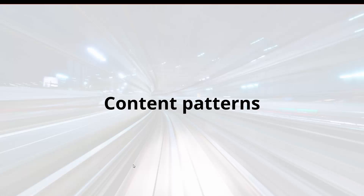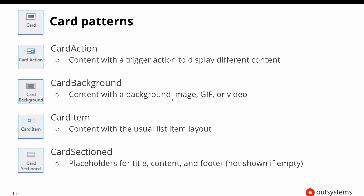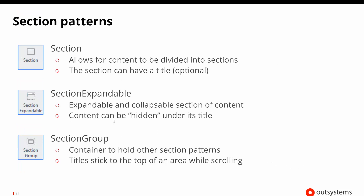Once we have layout and structure, we'd want content patterns to put in content. There are five different types of card patterns: a basic card, a card with a trigger and action inside it, a card with a background image or video, a card with a structured item layout, and a card with sections we can define. These card patterns handle the typical base card information.